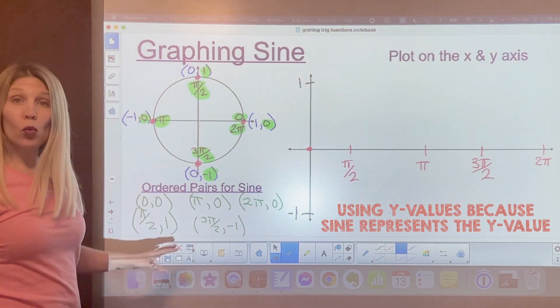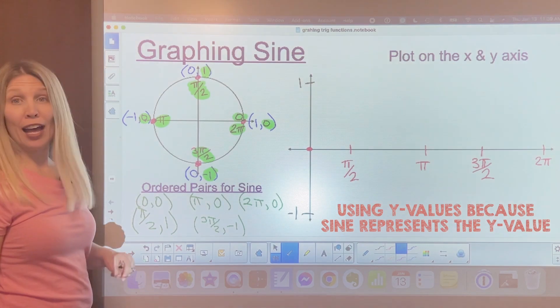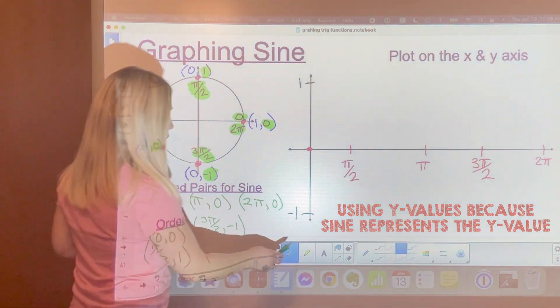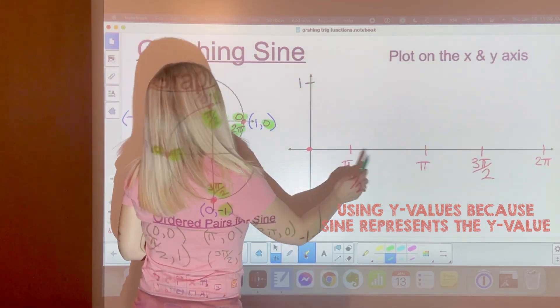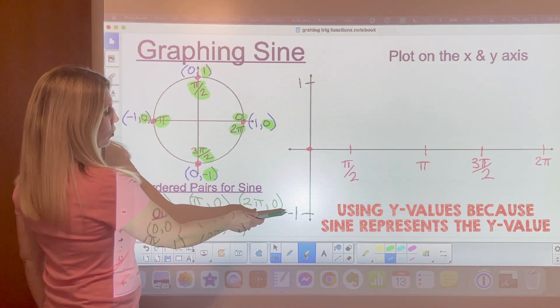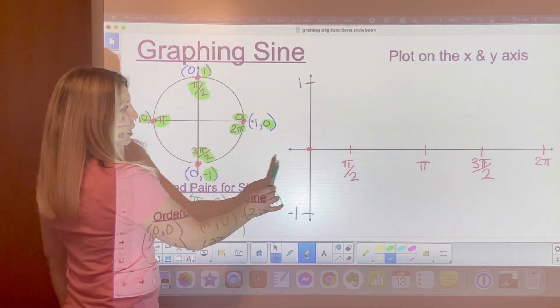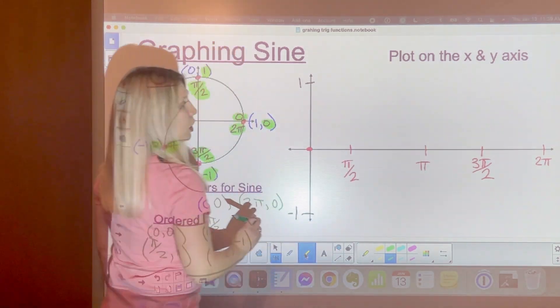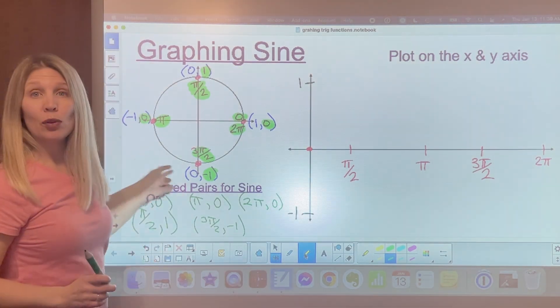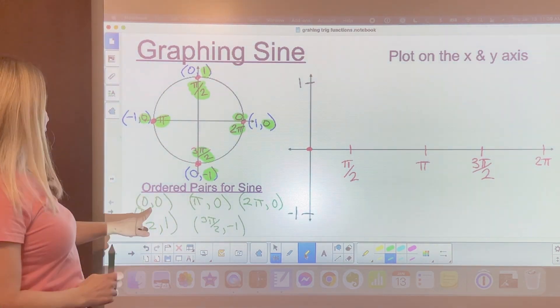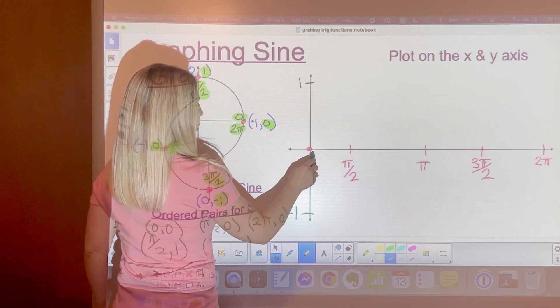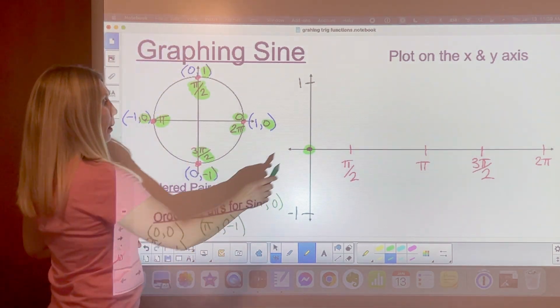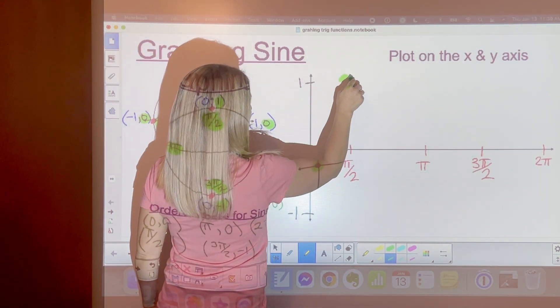These are what we're going to use for our ordered pairs to label on the graph on the right. You'll see at the graph on the right, I have our values from negative 1 to 1 in our y-axis and from 0 to 2 pi, just like we have on the unit circle. My first ordered pair is 0, 0. Then we have pi over 2 is at 1.